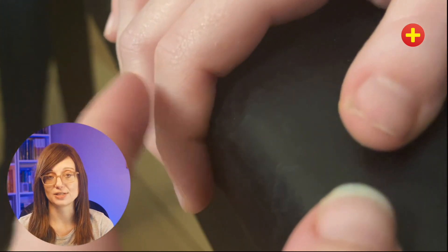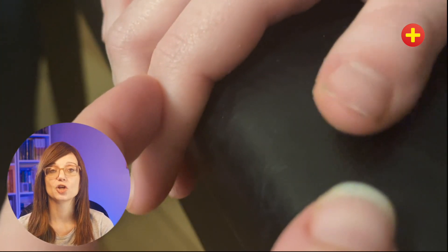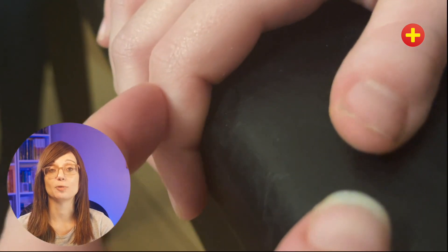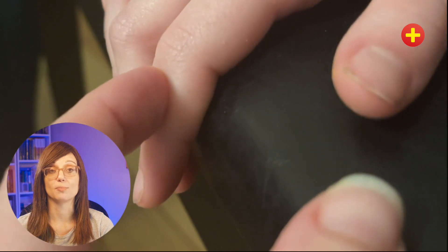But if you've got a rupture of the central slip, so a positive test, you'll have weak PIPJ extension and the DIP will extend abnormally and the distal phalanx will become rigid.